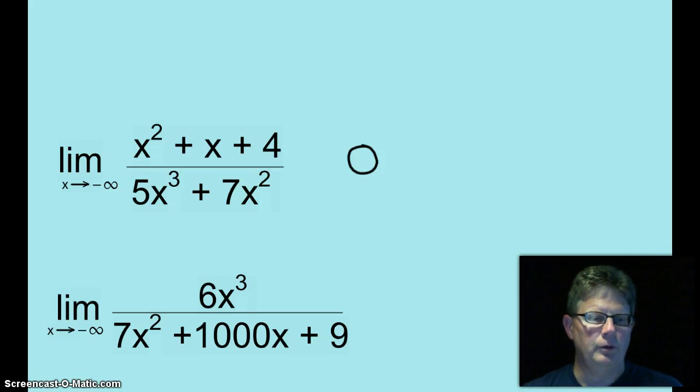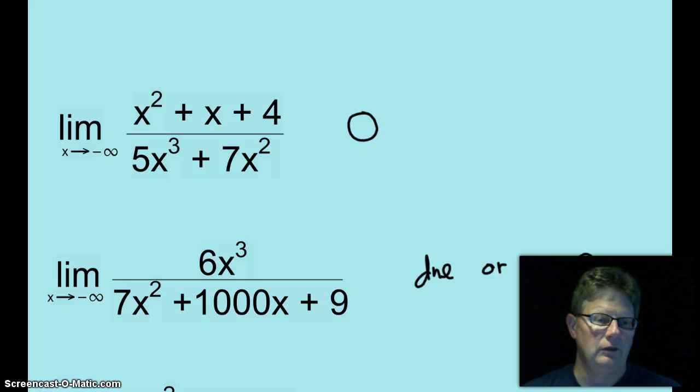Okay, the limit as x approaches negative infinity of that rational function. The degree of the denominator is less than the degree of the numerator. But this time, instead of saying there is no horizontal asymptote, we are going to look at the denominator. Since that x squared will make the negative infinity a positive and that x cubed will make that numerator a negative, we are going to say that the limit does not exist or the limit is negative infinity. Some multiple choice questions will say does not exist, some of them will have negative infinity as an option. So I just wanted you to see both ways on that.